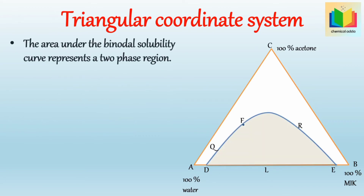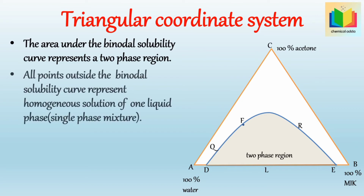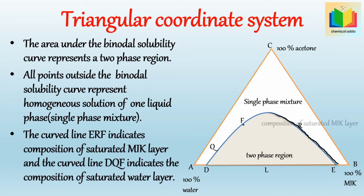The area under the binodal solubility curve represents a two-phase region, and all points outside the binodal solubility curve represent a homogeneous solution of one liquid phase, that is, a single-phase mixture. The curved line ERF indicates the composition of the saturated MIK layer, which shows the extract phase, and the curved line TQF indicates the composition of the saturated water layer, which shows the raffinate phase.